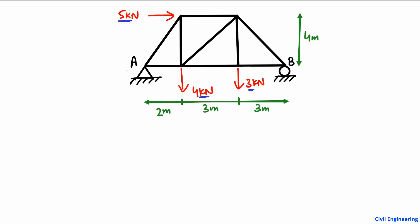There are two supports. One is A, which is a hinge support, and one is B, which is a roller support. The hinge support can take two reactions — one in the vertical direction, RAY, and one in the horizontal direction, RAX. The roller support can only take the vertical direction; it cannot take any horizontal reaction.